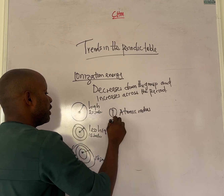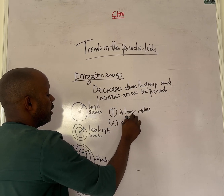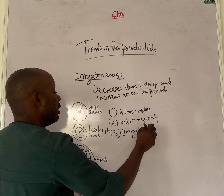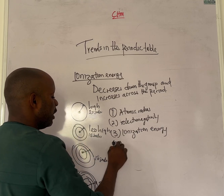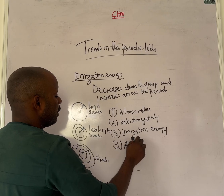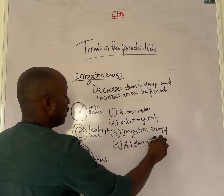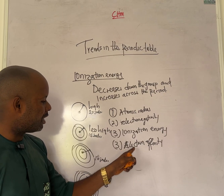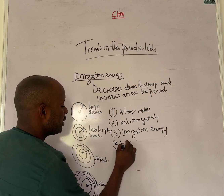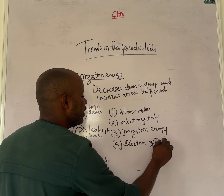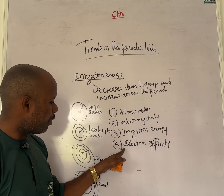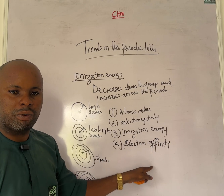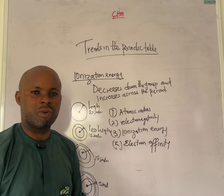To summarize the trends covered: atomic radius, electronegativity, and ionization energy. The fourth trend to mention is electron affinity, which is defined as the energy released when an electron is added to an atom. Students are invited to comment on what the trend of electron affinity is down the group and across the period. Please subscribe to the channel. Thank you.